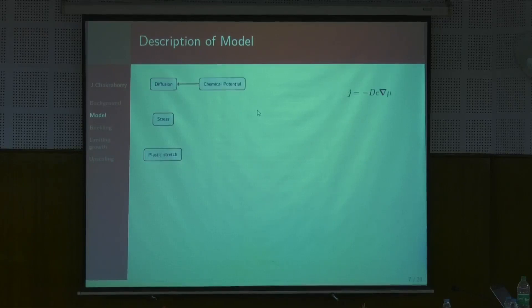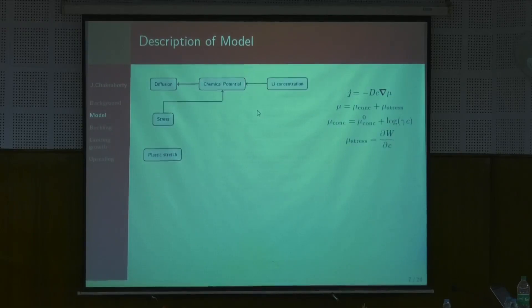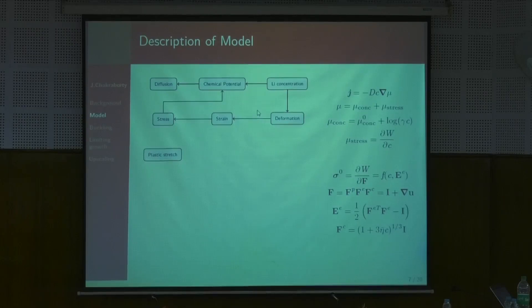Diffusion is intrinsically connected to chemical potential, which is related to both concentration and stress. The stress is influencing the chemical potential — this is the new part. The stress itself is primarily generated because of the heterogeneity in concentration. Stress is related to strain, which is due to deformation, and the primary driver of that deformation is the heterogeneity in lithium concentration.